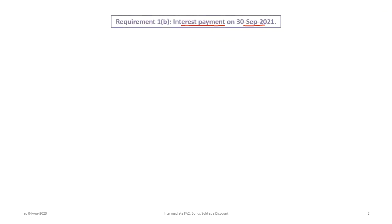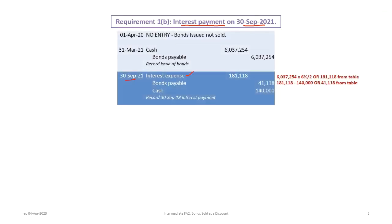The next requirement is to record the interest payment on September 30th. We debit interest expense, credit cash for $140,000 based on the face rate of interest. The interest expense is based on the yield rate: the carrying balance of $6,037,254 times 6% divided by 2 (or 3%), giving $181,118 — matching the amortization table. We debit interest expense $181,118 and credit bond payable $41,118 to bring the carrying value up toward $7 million.